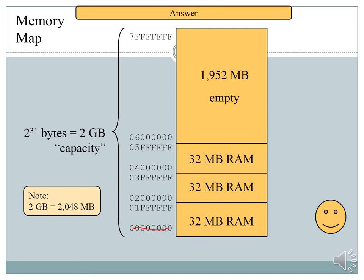The starting address is 0x000000 at the bottom. Then we add 32 megabytes of RAM — this region is normally 8 bits wide. 32 megabytes is 32 × 2²⁰; convert that value to hexadecimal to get the ending address.